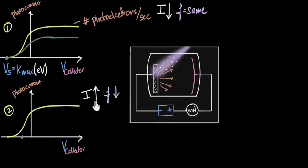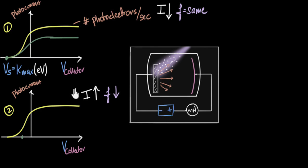Now what happens due to the increased intensity? If the intensity has increased, remember that intensity is an indicator of how many photons there are per second. More intensity means more photons per second, and if there are more photons per second, there'll be more electrons coming out per second. And if there are more electrons coming out per second, the saturation current should be higher. So in this case, the saturation current should become larger, and the graph goes from a smaller stopping voltage up to a higher saturation current.